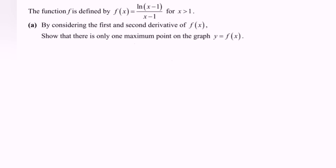Hello everyone. Here we have an example for the topic of differentiation. The function f is defined by f(x) = ln(x-1) for the domain x greater than 1. By considering the first and the second derivative for the function f(x), show that there is only one maximum point on the graph for y equals f(x).